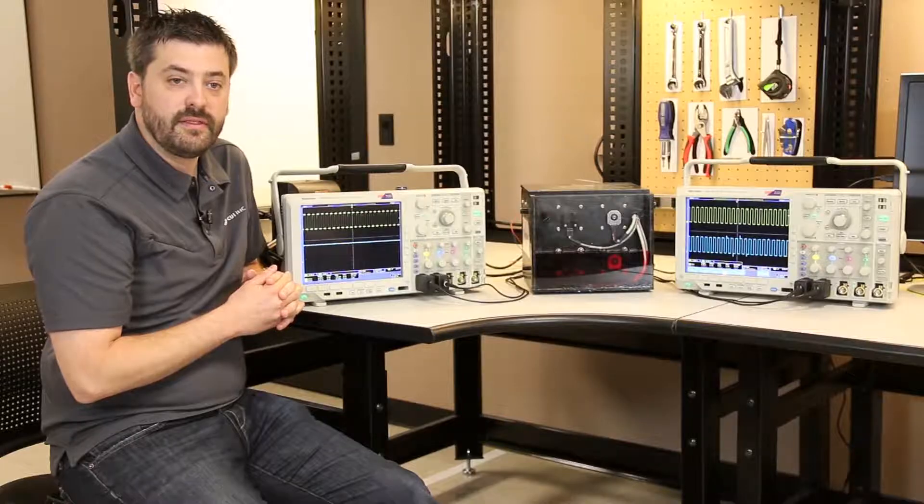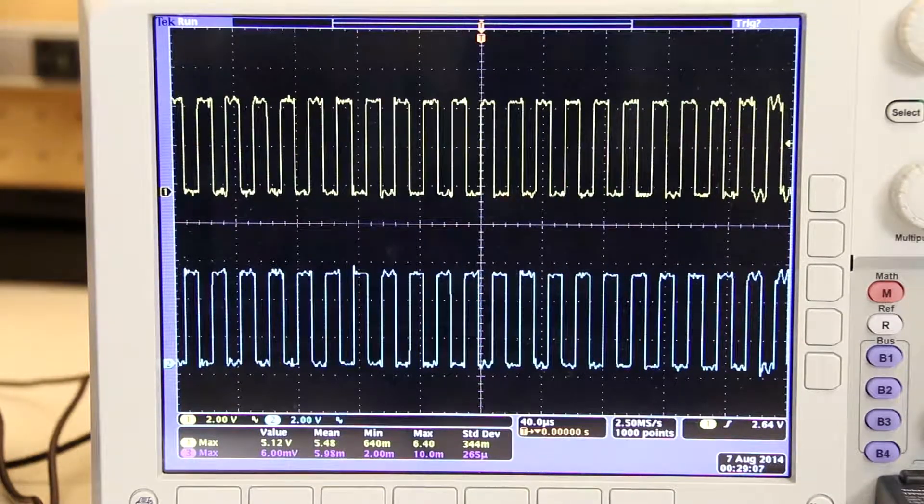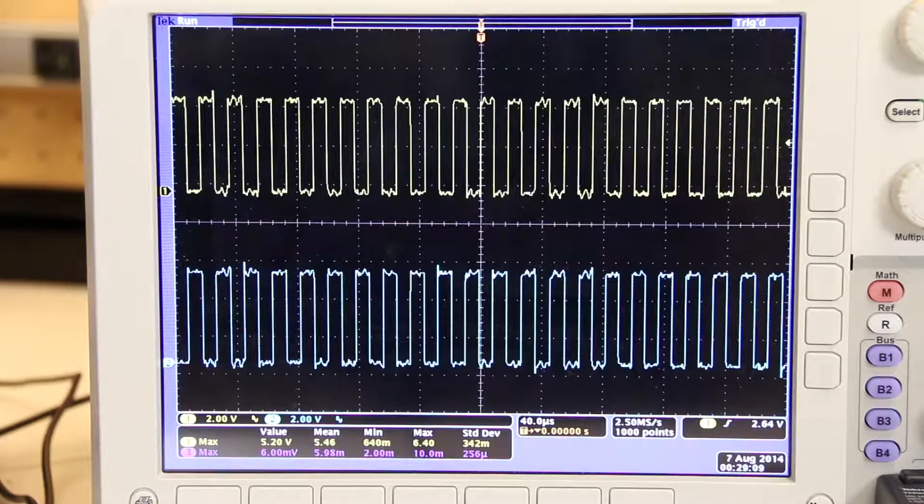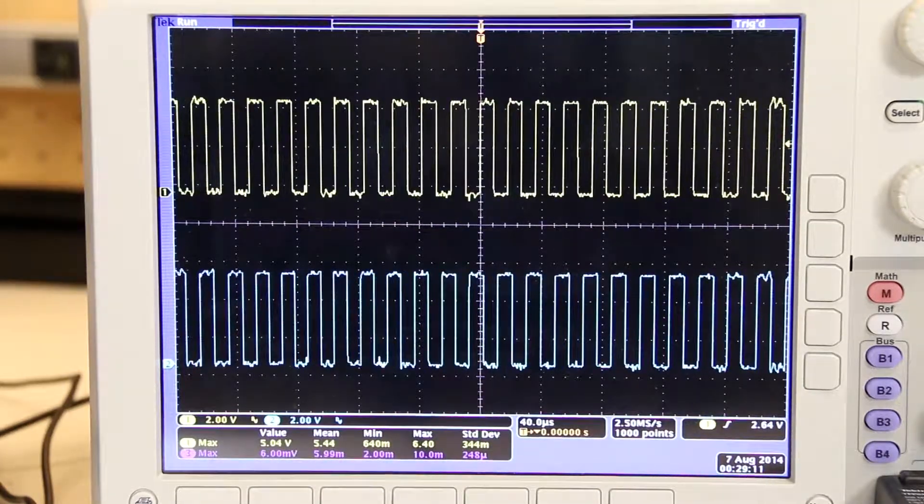Whereas on the other side, the AMT encoder, both in air and in oil, is operating exactly as you would expect, giving those nice square wave pulses.